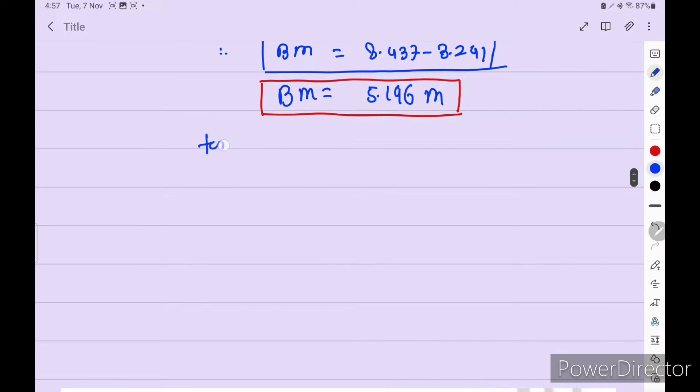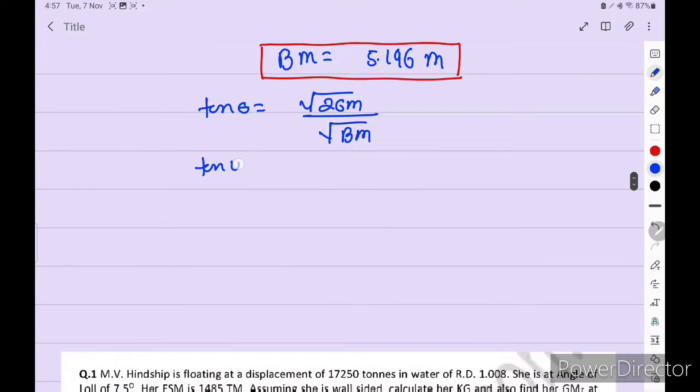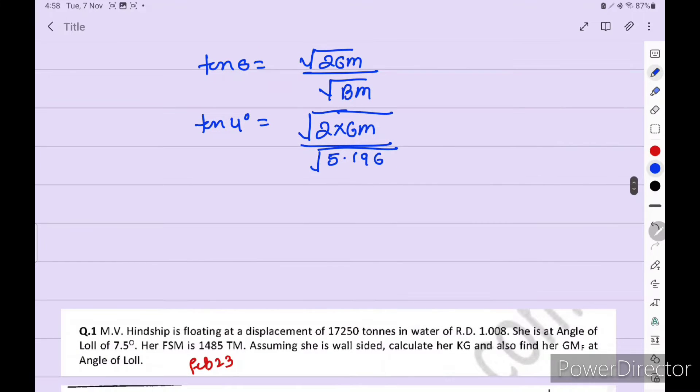Okay. So we get the BM. So BM is equal to 5.196 meter. Now our angle of loll formula is tan theta is equal to 2 square root GM square root BM. So angle of loll is given. So angle of loll is given tan 4 degree. 2 into GM, BM we calculate just now 5.196.